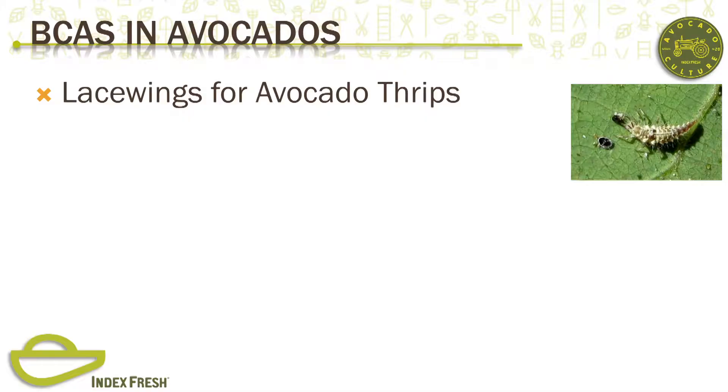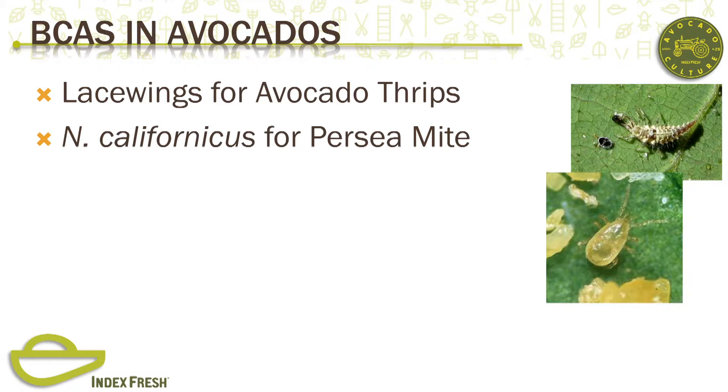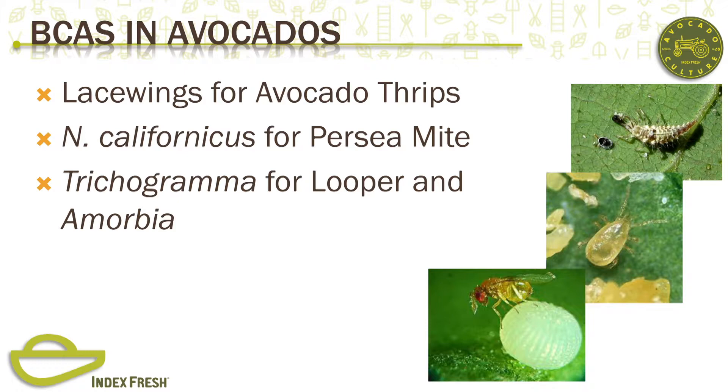I should note that collecting pests, smashing them up, straining out the insect parts, and spraying the liquid back on insects is an old-school method, but that is not a registered pesticide so I'm not actively recommending you do that. As for avocados, the primary three pests we deal with and the beneficial insects you can use to control them are: lacewings for avocado thrips, californicus predatory mites for persia mite, and Trichogramma for looper and amorbia.